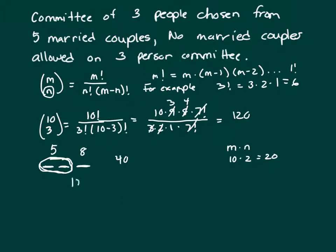So you take a total of 120 total number of committees, and there's 40 of those committees that have got a married couple on there. So subtract that out, and you get 80.